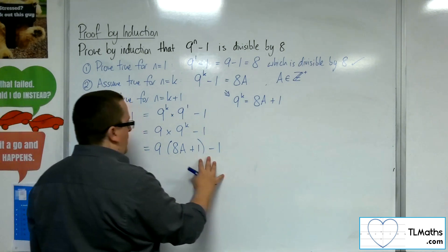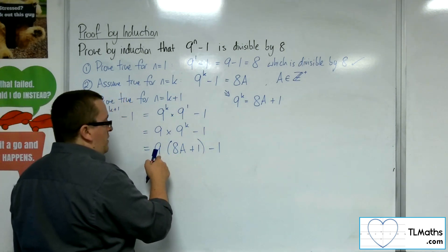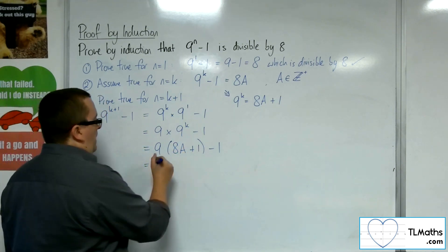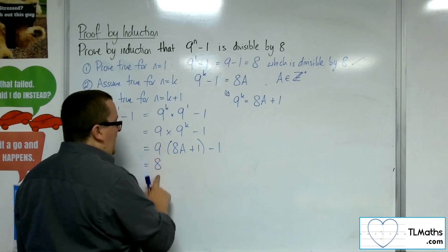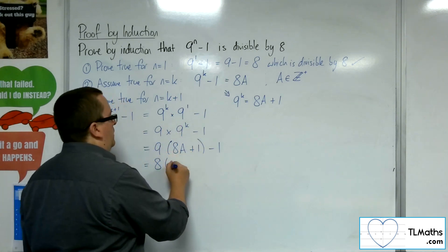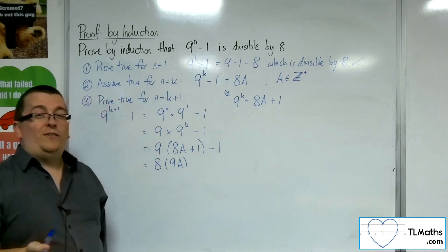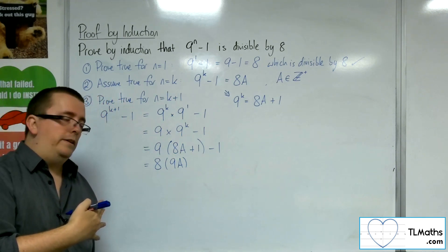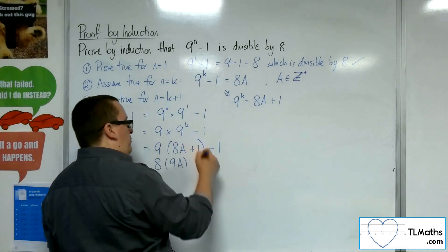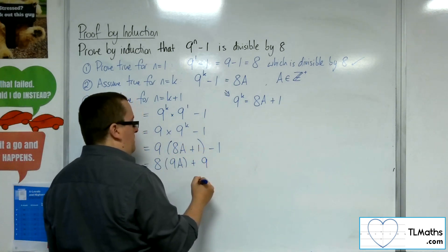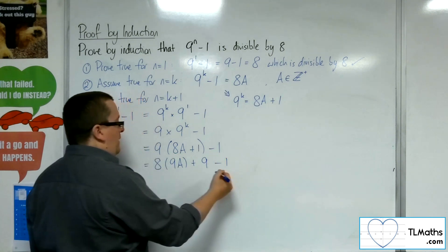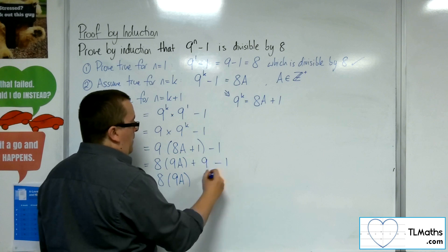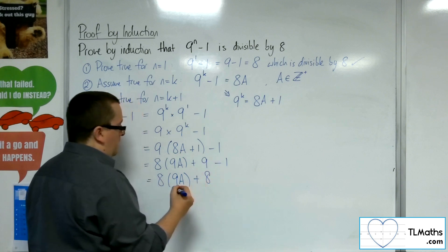Now, if I multiply that bracket out, I've got 9 times 8a. Now, I know that's 72a. However, I'm going to keep it as 8 lots of 9a. The reason why is that it makes it very clear that I know it's divisible by 8. I've got 9 times 1, which is 9. And I've still got that take away 1 on the outside. So I've got 8 lots of 9a and 9 take away 1. Well, that's 8.